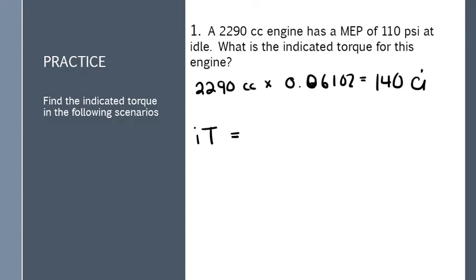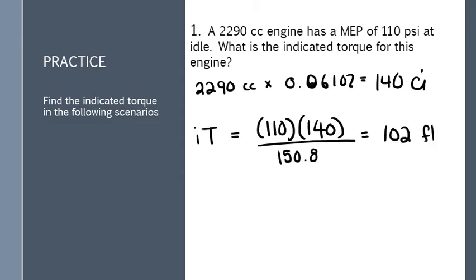So the formula now for indicated torque. We're going to take the mean effective pressure 110, multiply it by the displacement. This question was nice because it didn't give us any red herring rpms. It just said at idle. And we divide it by the number they gave us, 150.8. Answer will be in foot-pounds, 102 foot-pounds.